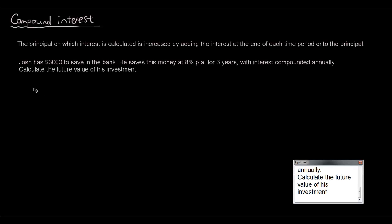So let's have a look at this example. Josh has $3,000 to save in the bank. He saves this money at 8% per annum interest for 3 years with interest compounded annually. Basically, calculate the future value of this investment — how much interest Josh will earn during the 3 years and add it onto his principal.